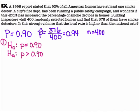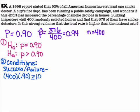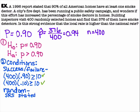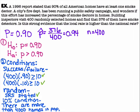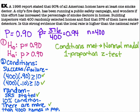Checking conditions: success-failure — 400 × 0.9 ≥ 10 and 400 × 0.1 ≥ 10, both satisfied. Randomization was stated. The 10% condition — we assume more than 4,000 homes in the population. Conditions are met; we use a normal model and perform a one proportion Z test.